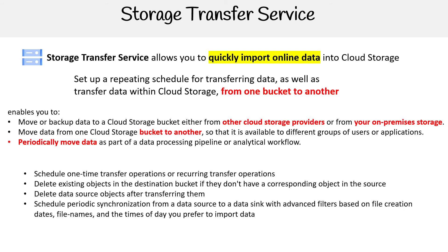You can use Storage Transfer Service for cross-region replication, since you can move data on a schedule from bucket to bucket. You can also get data from other cloud storage providers like AWS, or from on-premise storage.